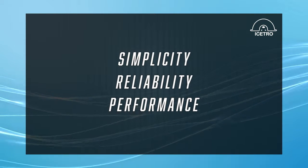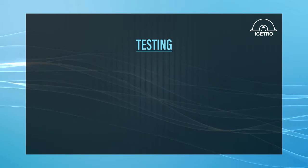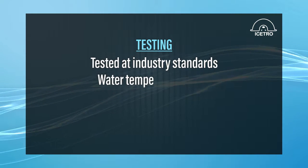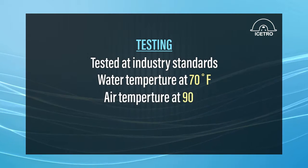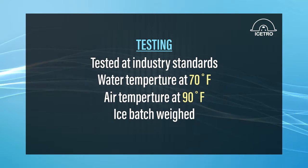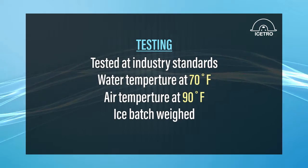All Aistro ice makers are run for three cycles prior to shipping. The machines are tested at industry standards at 70 degree water temperature and 90 degree air temperature. Then the ice batch is weighed and if the ice machine does not pass inspection, it is pulled out of production.